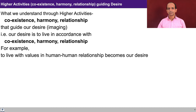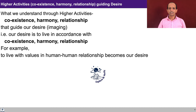With the activity of contemplation activated we see relationship, with understanding activated we see harmony, and with realization we see coexistence — and this guides the lower level activities, beginning with imaging at the level of desire. The desire transforms into living with coexistence, harmony, and relationship. Earlier the imaging was colored by preconditionings or by sensations the self gets from the body, but now it comes into accordance with the higher level activities in completeness. For example, to live with values in human-human relationship becomes our desire.